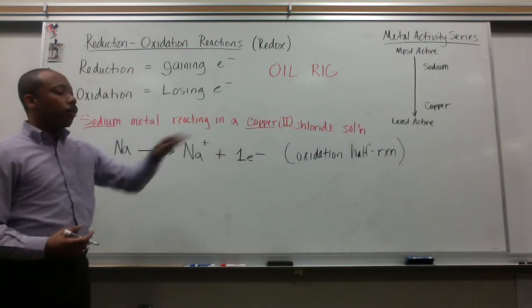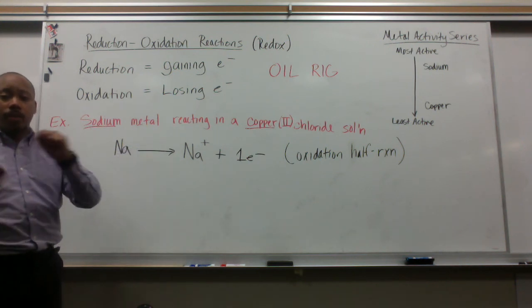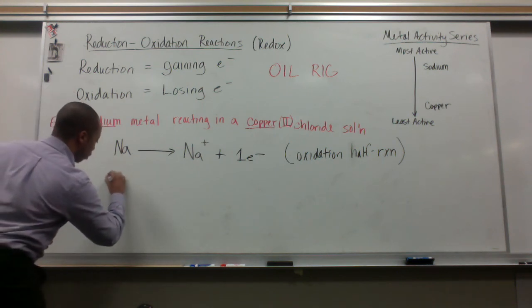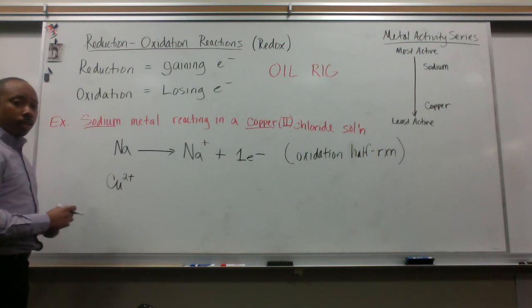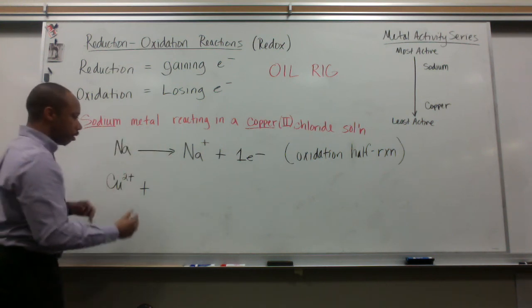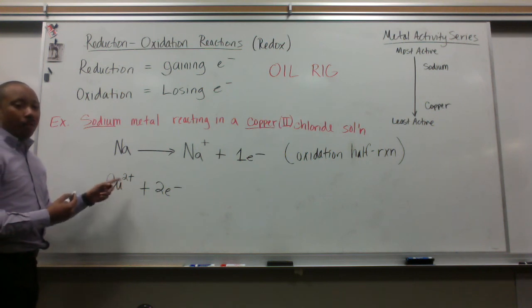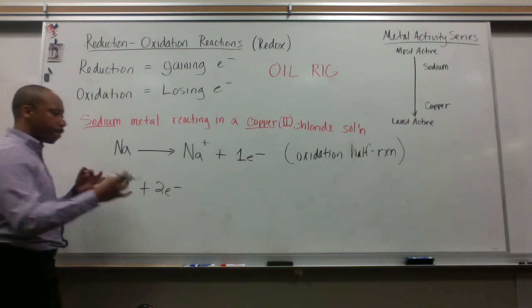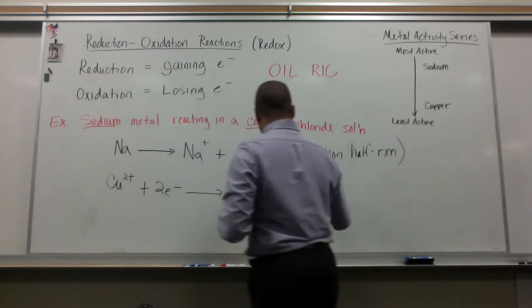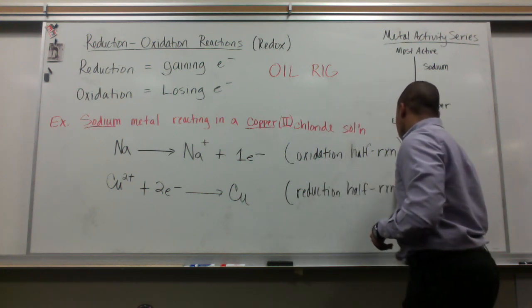My copper chloride solution, in an ionic solution, we have the cations floating around separated from the anions. Copper 2 plus ions are going to get the electrons that the sodium releases. They're going to get two electrons in order to become neutral. Since it is gaining electrons, this is my reduction half reaction.